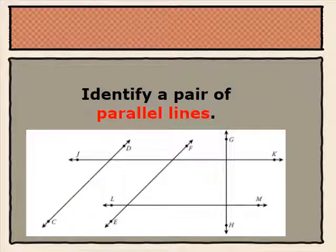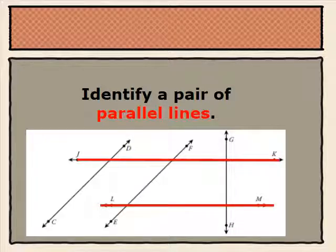Now we'll identify another pair of parallel lines in the diagram below. Another pair of parallel lines are line JK and line LM. We know that they are parallel because no matter how far we extend either of those lines, they will never intersect.